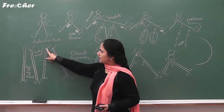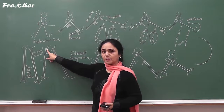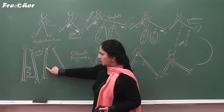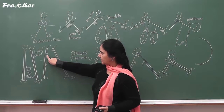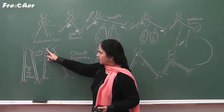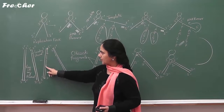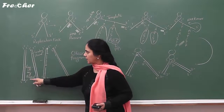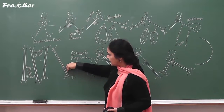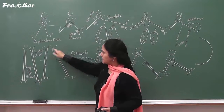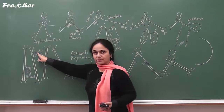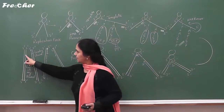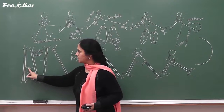Each Okazaki fragment requires its own RNA primer, but this RNA primer is removed by DNA polymerase 1. Enzyme ligase joins the Okazaki fragments, resulting in the formation of a new complete strand known as the lagging strand. The strand which is formed continuously is known as the leading strand, and the strand which is produced discontinuously is known as the lagging strand.